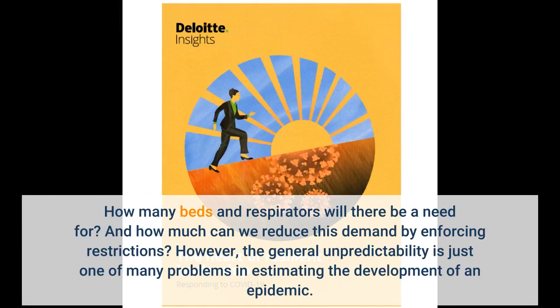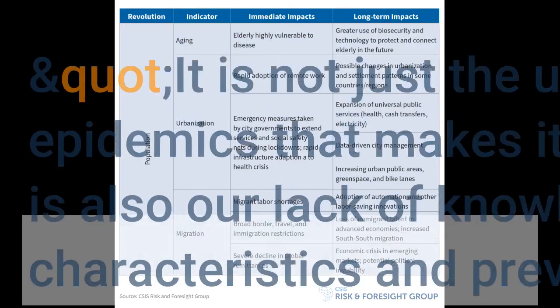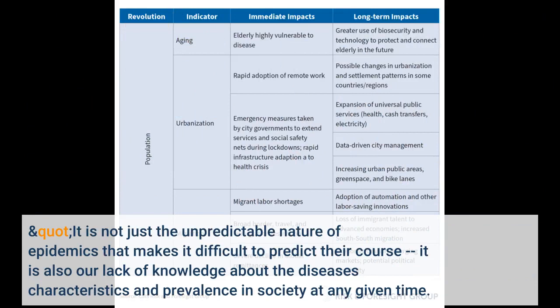However, the general unpredictability is just one of many problems in estimating the development of an epidemic. It is not just the unpredictable nature of epidemics that makes it difficult to predict their course — it is also our lack of knowledge about the disease's characteristics and prevalence in society at any given time.